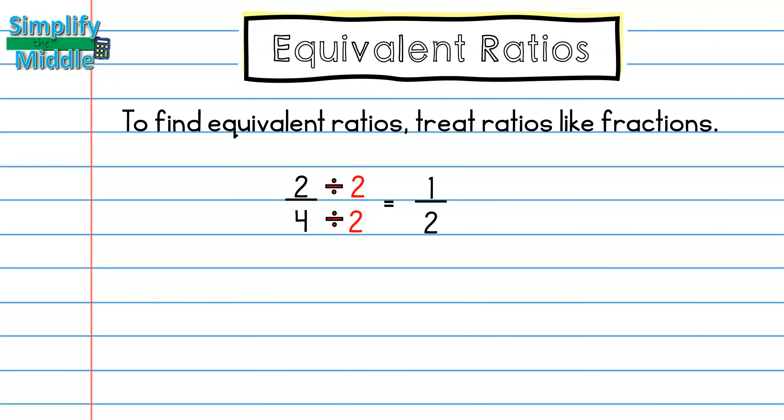This allows me to find other equivalent ratios. So I can multiply 1 half by 3 on the numerator and denominator and end up with 3 sixths. 3 sixths is an equivalent ratio to 2 fourths and 1 half. If my fractions all simplify to the same fraction, then they are equivalent.